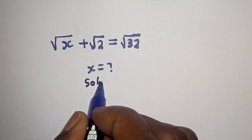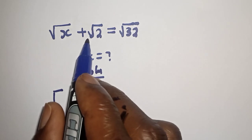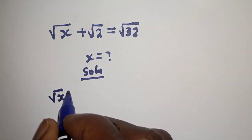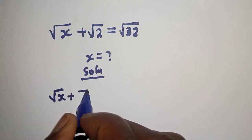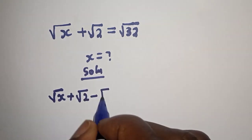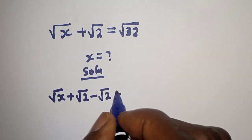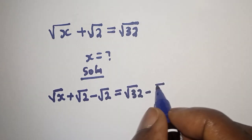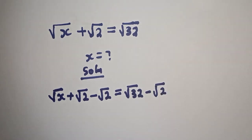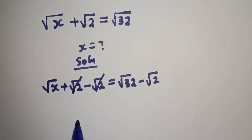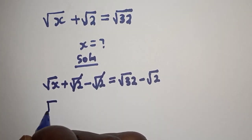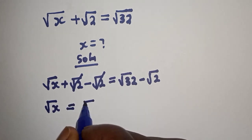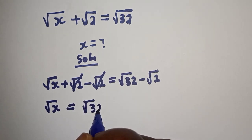Solution: let's subtract root 2 from both sides. That is, square root of s plus square root of 2 minus square root of 2 is equal to square root of 32 minus square root of 2. These cancel, so we have square root of s is equal to square root of 32 minus square root of 2.